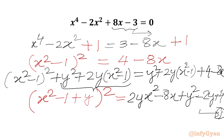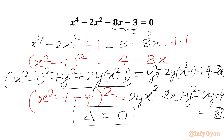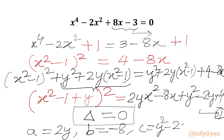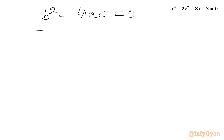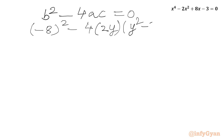The left hand side is one perfect square, so we can set the discriminant equal to 0 for our RHS. Comparing with standard ax² + bx + c, we get a = 2y, b = -8, and c = y² - 2y + 4. Now the discriminant is b² - 4ac, so we write b² - 4ac = 0: (-8)² - 4 × 2y × (y² - 2y + 4) = 0.